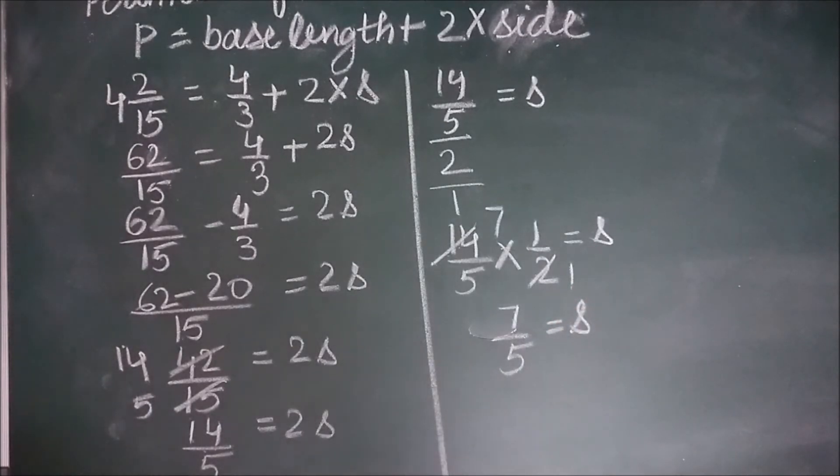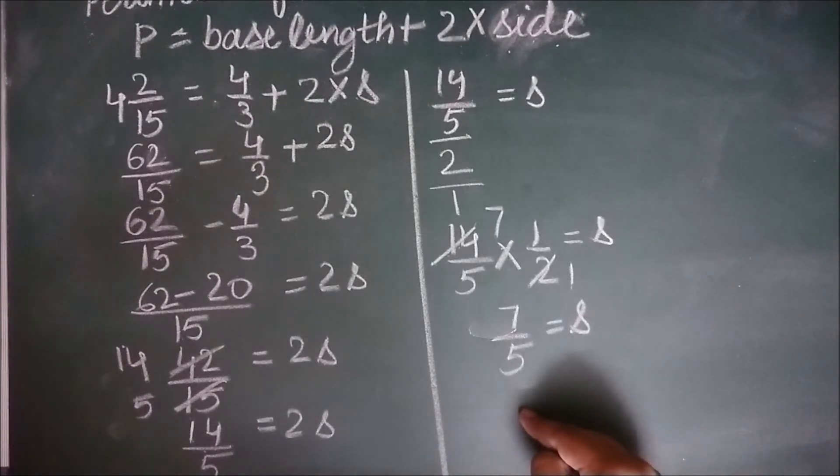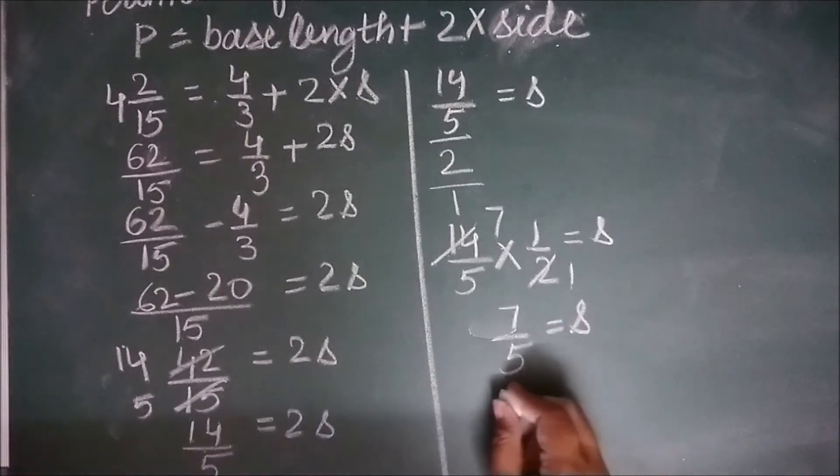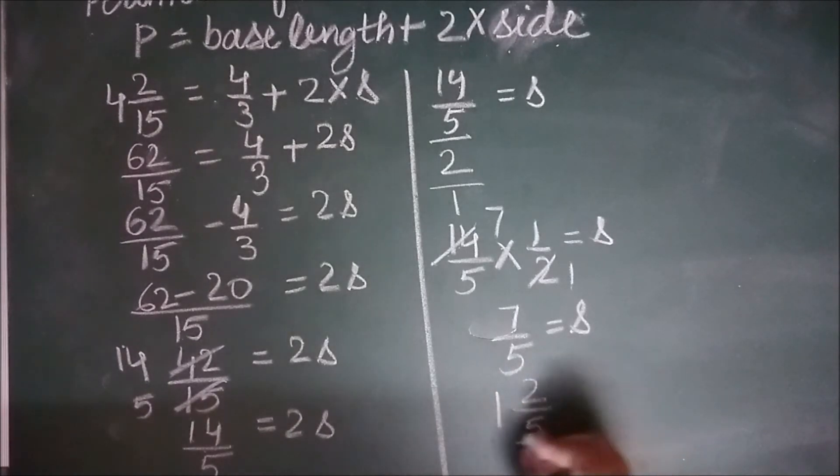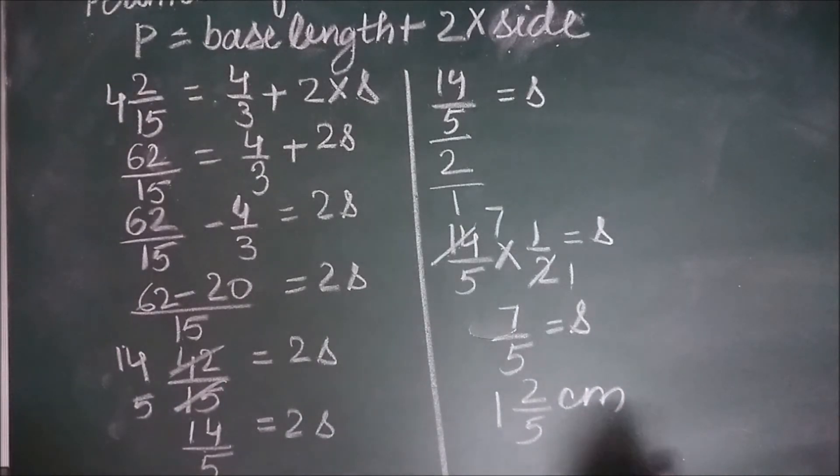So this is our solution. The length of the side is 7 by 5. Or you may also convert it into mixed fraction. You will get 1 2 by 5 centimeter.